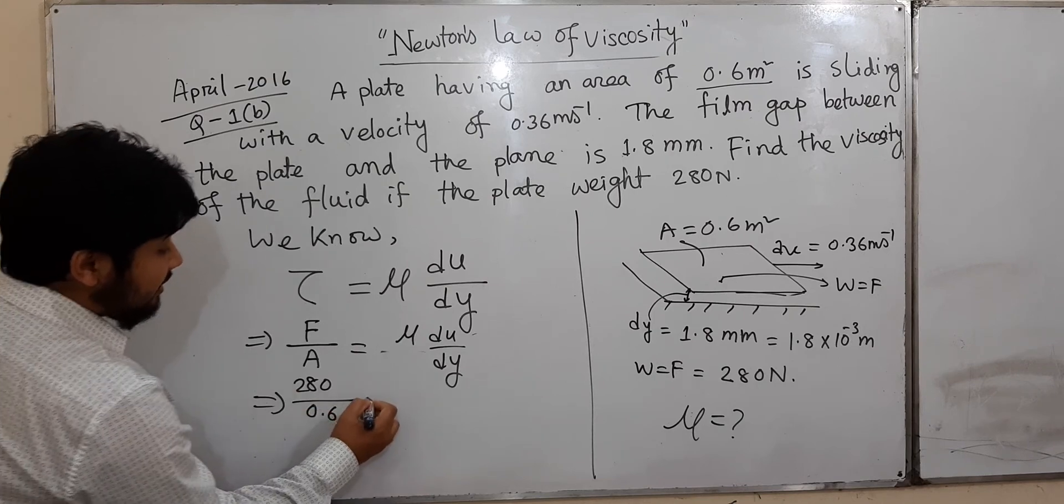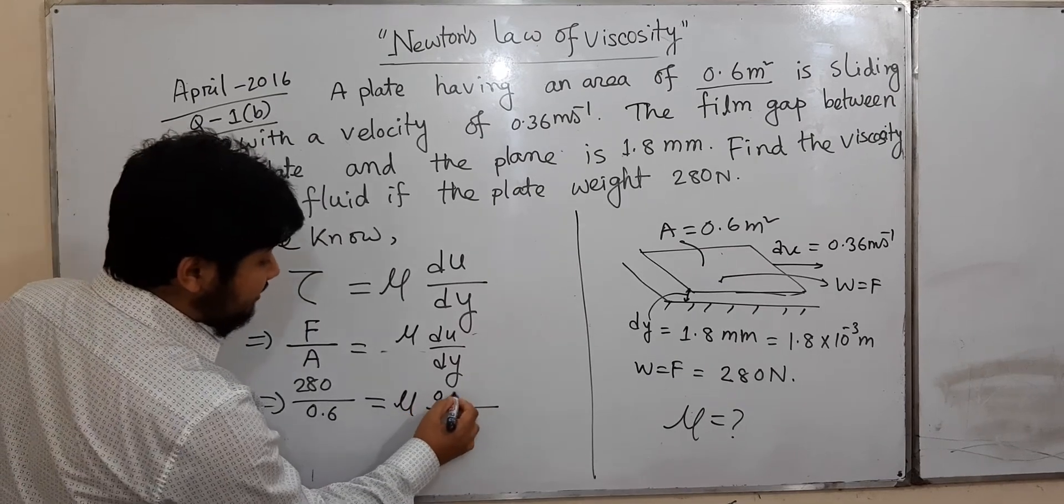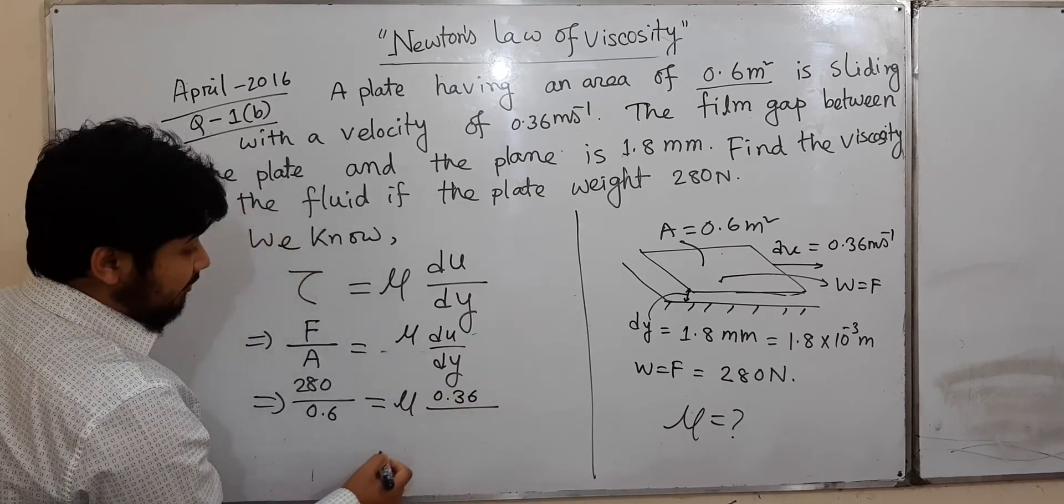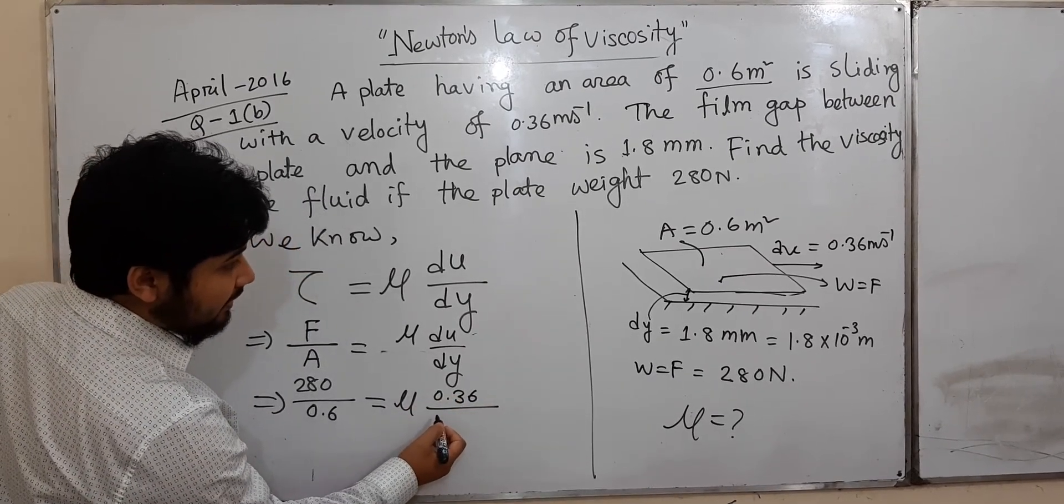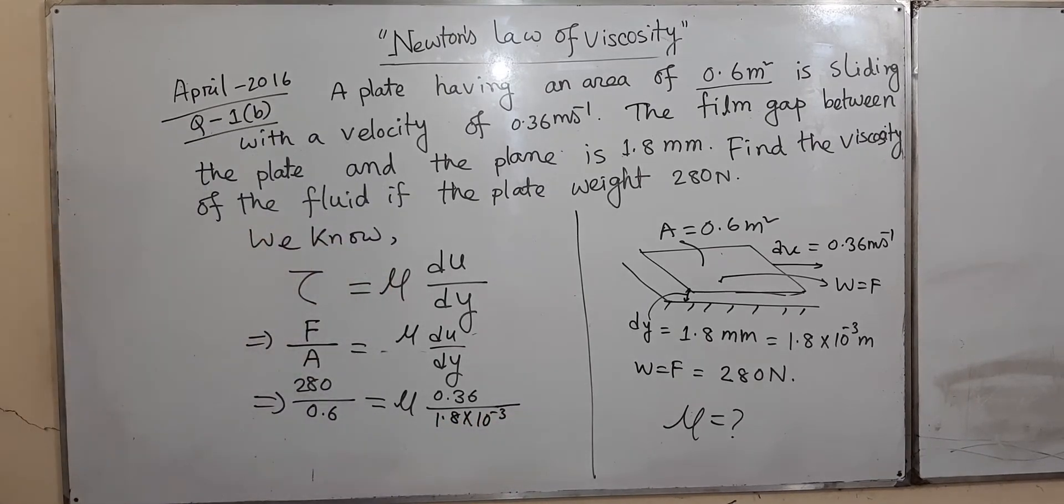The shear stress is force over area, 280 divided by 0.6 square meters, which equals μ times du (0.36) divided by dy (1.8 × 10^-3 meters).